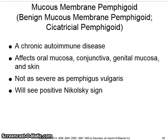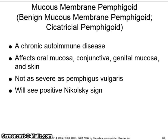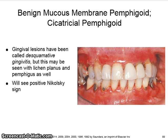Benign mucous membrane pemphigoid — also called mucous membrane pemphigoid or cicatricial pemphigoid — is a chronic autoimmune disease that affects the oral mucosa, conjunctiva, genital mucosa, and skin. It is not as severe as pemphigus vulgaris, but you will also see a positive Nikolsky sign.